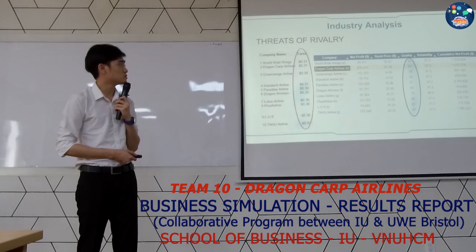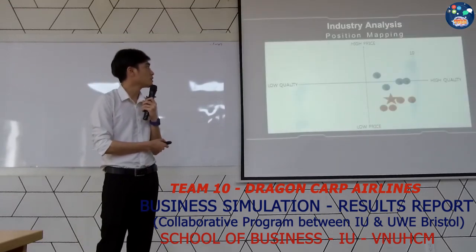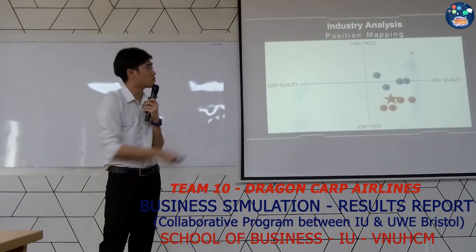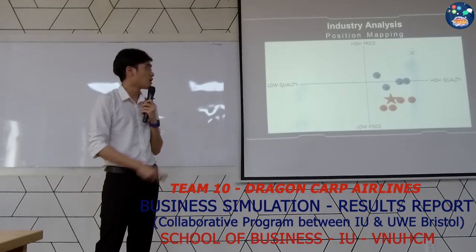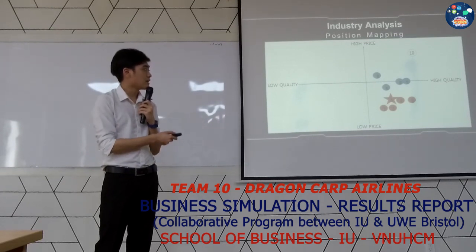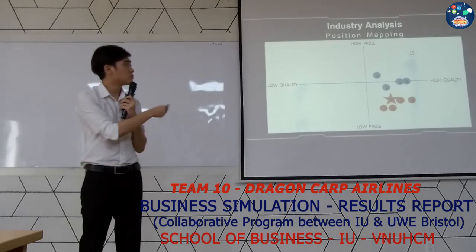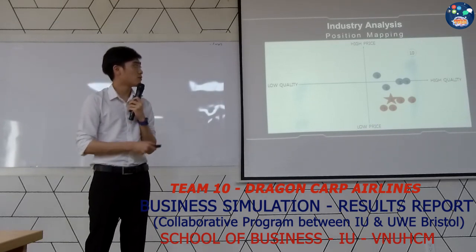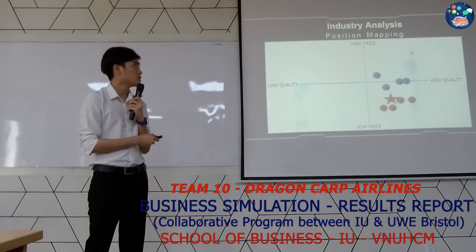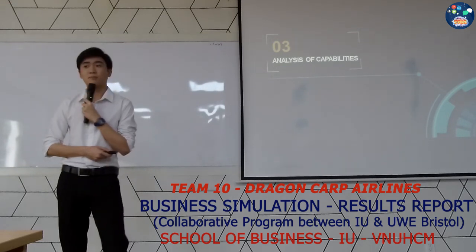We used this information to make a position mapping. In this figure, the star symbol represents our company. Other orange circles, such as World Wide Wind, Wonder X, Paradise, and Bluetooth, are our direct competitors. The blue one represents normal fare airlines, and there is only one luxury airline in our industry. The next part is about analyzing our capacity.